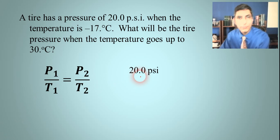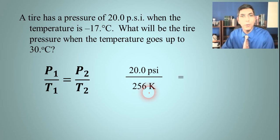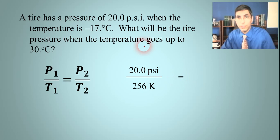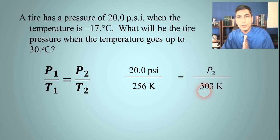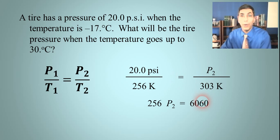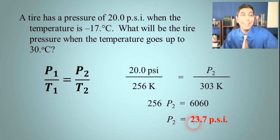Gay-Lussac's law example: A tire has a pressure of 20 psi at -17°C. What will the pressure be at 30°C? You don't need to convert psi — just stay consistent with units. Plugging in: p1 = 20 psi, t1 = -17°C = 256 K, t2 = 30°C = 303 K. Cross-multiplying: 303 times 20 = 6060, divided by 256, gives a final pressure of 23.7 psi.